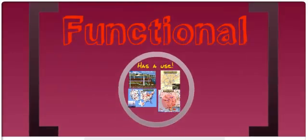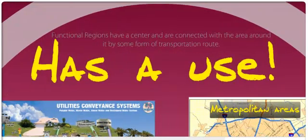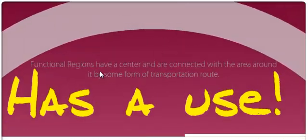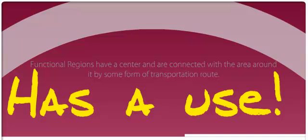Now, functional regions. Functional regions are cool because they have a use — they wouldn't be a region if there wasn't a use for them. Functional regions have a center; they are based around something and are connected with the area around them by some kind of transportation route. What are some examples? Let's take a look.